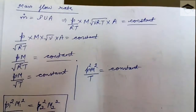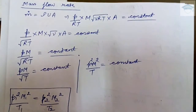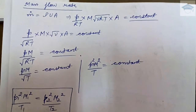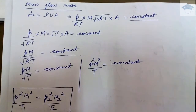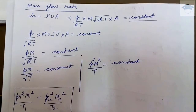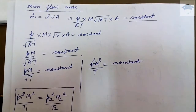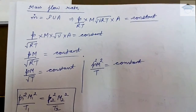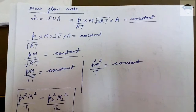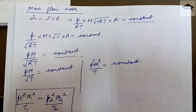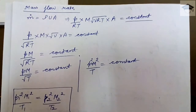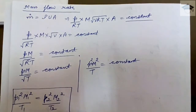The mass flow rate can be written as ṁ = ρ·u·A, that is density times velocity times area. Now ρ = p/(RT), u = M·c, and c = √(γRT), so u = M·√(γRT). Since mass flow rate is constant throughout the device: p/(RT) · M·√(γRT) · A = constant.